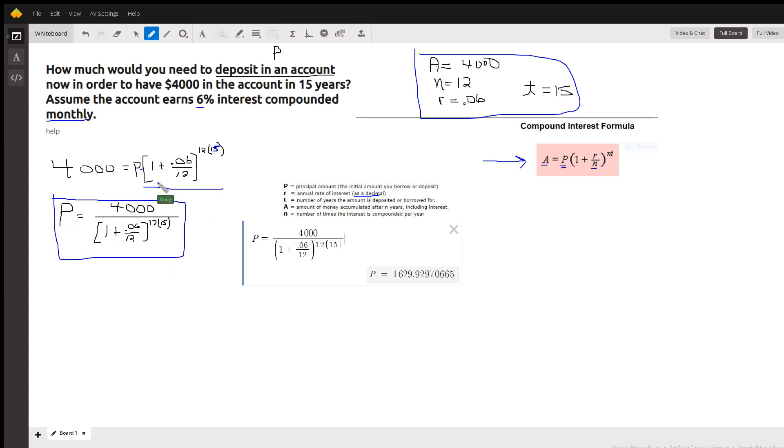Now, you could do intermediate calculations on your calculator, find out what 1 plus 0.06 divided by 12 is, then raise that to the 12 times 15, and then divide 4,000 by that number, or you could do it all at once, like I did here on Desmos, there's your answer. Rounded to the nearest penny, $1,629.93.